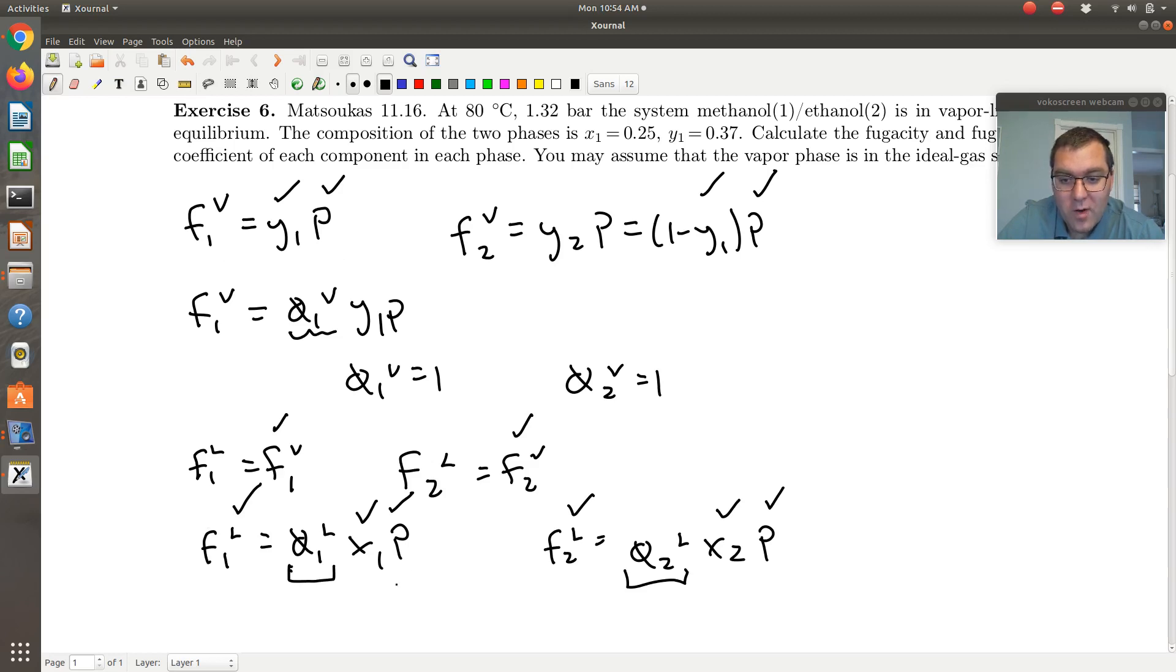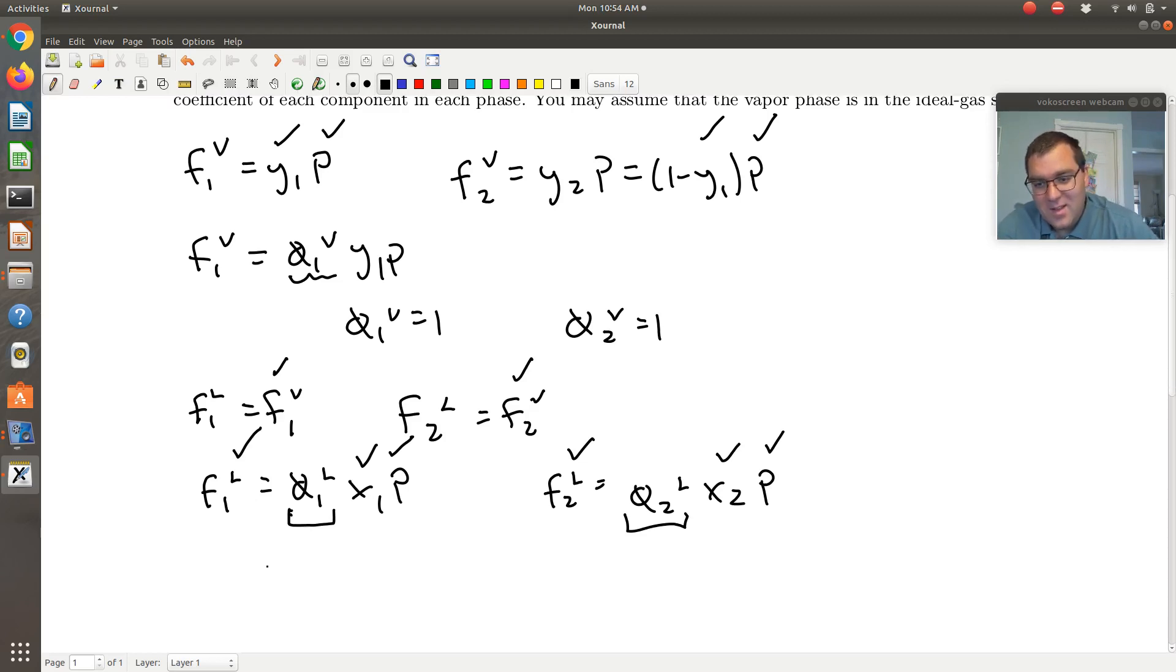F1L is equal to F1V, so Y1P over F1V is equal to 1. X1P over F1L, the denominator is the same, numerator is smaller, so I know phi1L... or actually I would have to flip it around. Yeah, let's solve it, and I'm going to try and make sense of this.